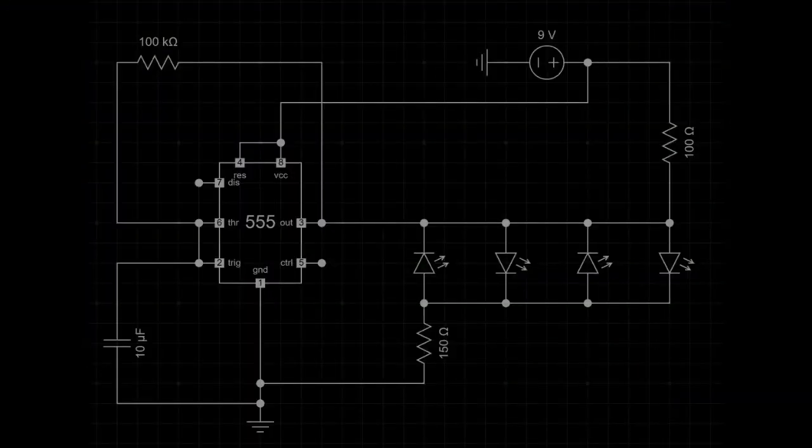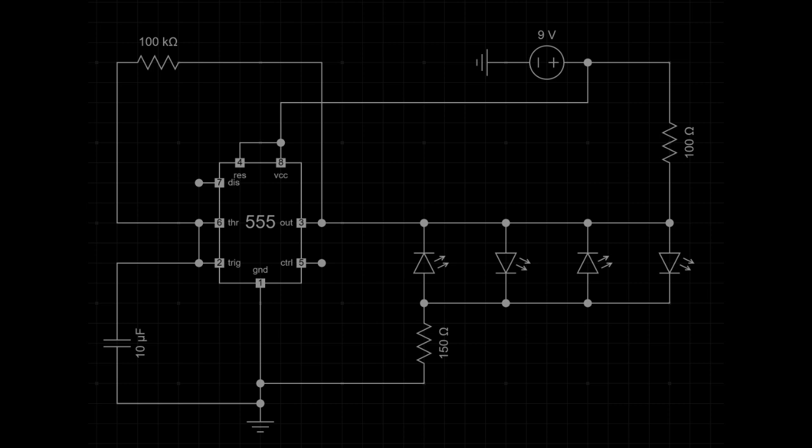Let's dive into the circuit and break it down step by step. The 555 timer is configured in astable mode, generating a continuous square wave signal.